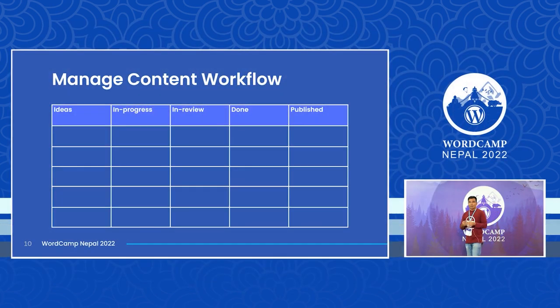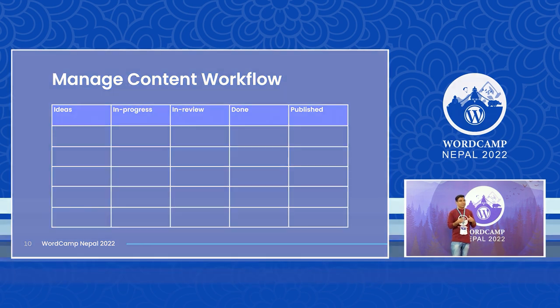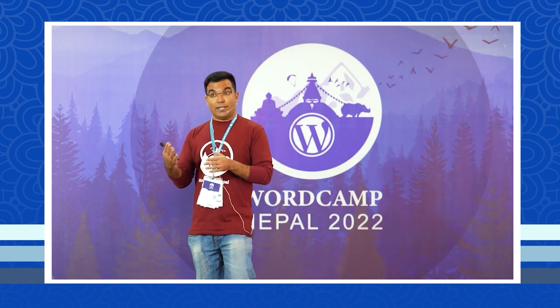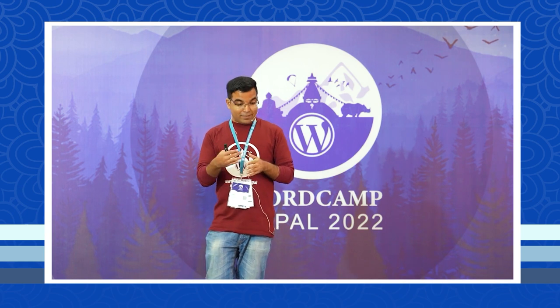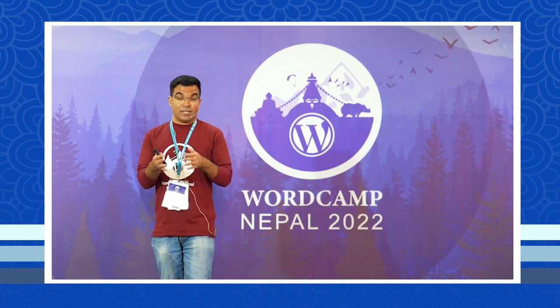Once you've done all that, you need to manage your content workflow. What I do is segment the flow into sections: Ideas, In Progress, In Review, Done, and Published. Whenever you get a new content idea, put it in the Ideas column to work on later. If you're actively working on an idea, move it to In Progress, then through Review and Done. This keeps you in touch with everything happening and prevents you from going off track.